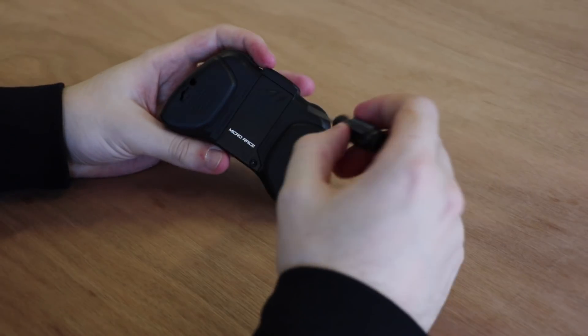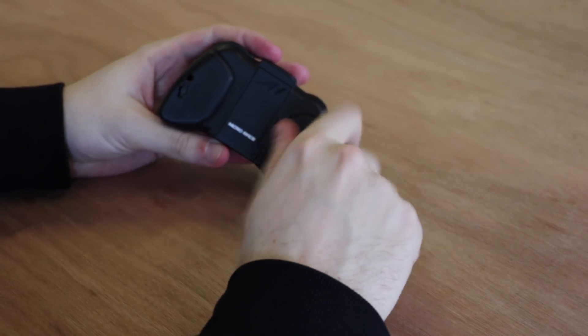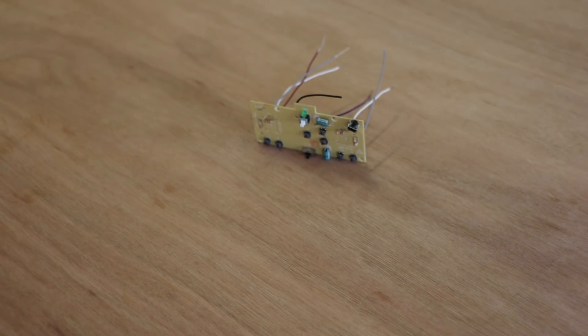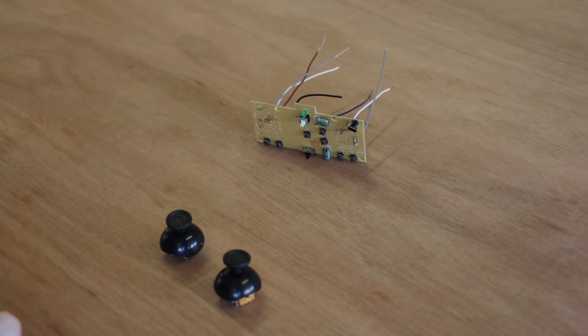First we open the case of the controller. Use any force necessary but don't break the circuit board inside. You will end up with something like this. Don't mind the wires, we add them later.